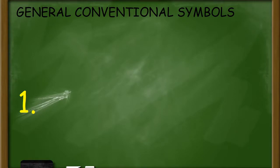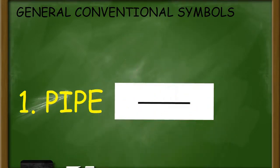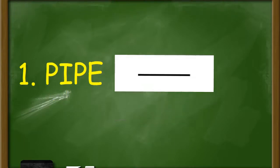Number 1: Pipe. A line is the symbol for pipe.